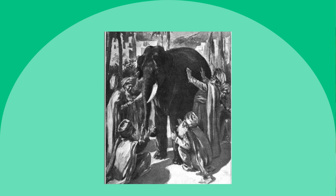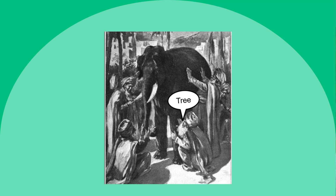There is this ancient parable of a group of blind men trying to describe an elephant. Each one is touching a different part of the animal's body. The guy touching the side thinks it's a wall, the guy touching the leg thinks it's a tree, the one touching the tusk thinks it's a spear. All of the descriptions of the elephant are different, based on limited experience.